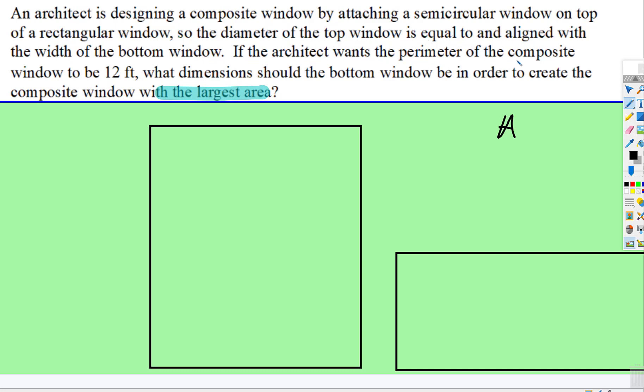If the architect wants the perimeter of the composite window to be 12 feet, what dimensions should the bottom window be in order to create the composite window with the largest area? So we're maximizing area.